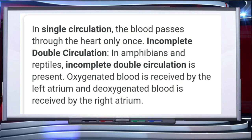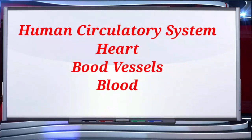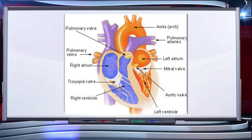In this chapter we will discuss the human circulatory system, which shows double circulation. The human circulatory system, also called the blood vascular system, consists of a muscular chambered heart, a network of closed branching blood vessels, and blood. Let's understand the structure of the human heart.